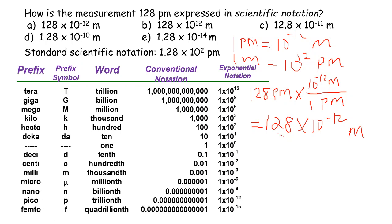But this is not in standard scientific notation. Let's move the decimal point to the left twice. If we move it twice to the left, we need to times 10 to the second. This is just the 128 part. We still have to copy what we have left here: the 10⁻¹². This gives us 1.28 times 10⁻¹⁰ meters.